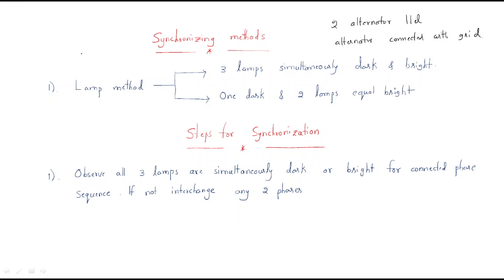Synchronization is done by the lamp method. In the lamp method there are two approaches: first, three lamps are simultaneously dark or bright; second, one lamp is dark and two lamps are equally bright.